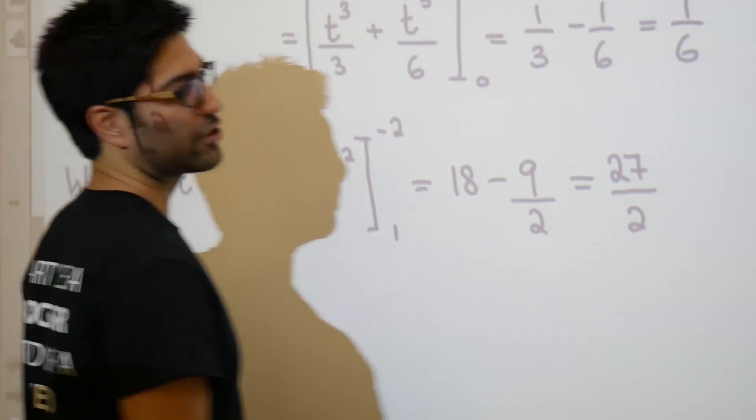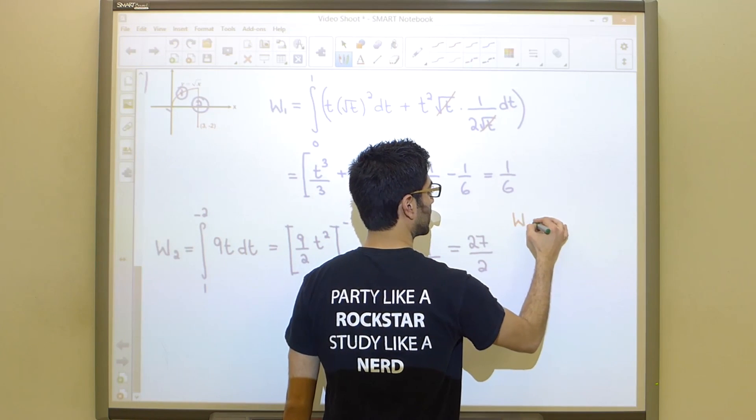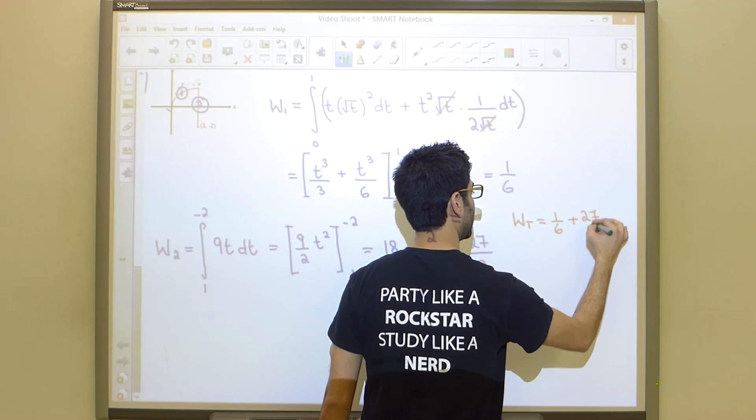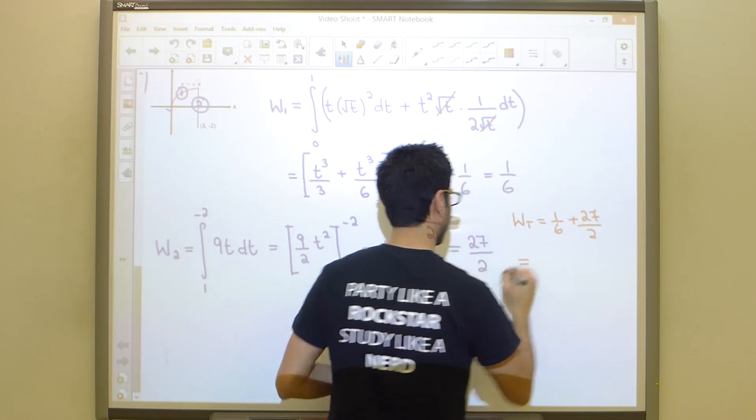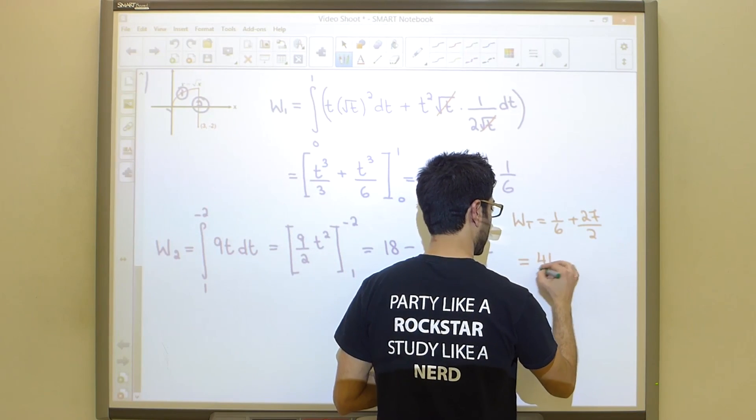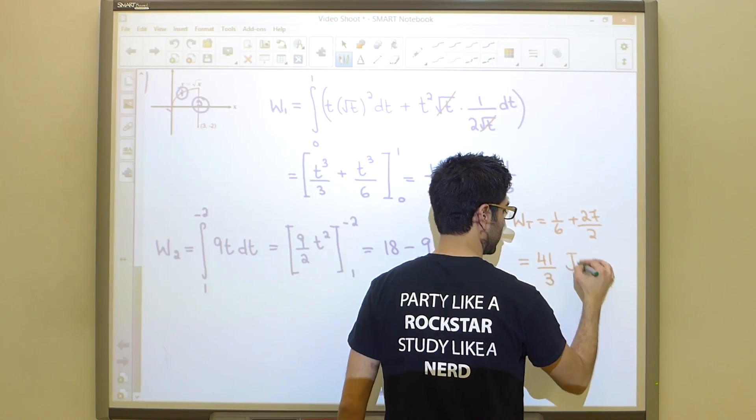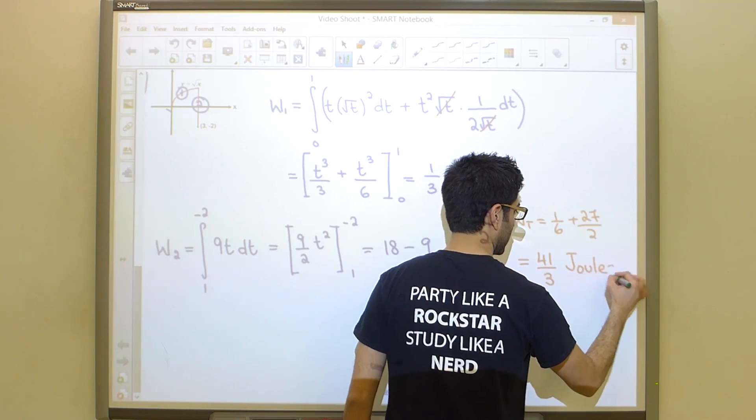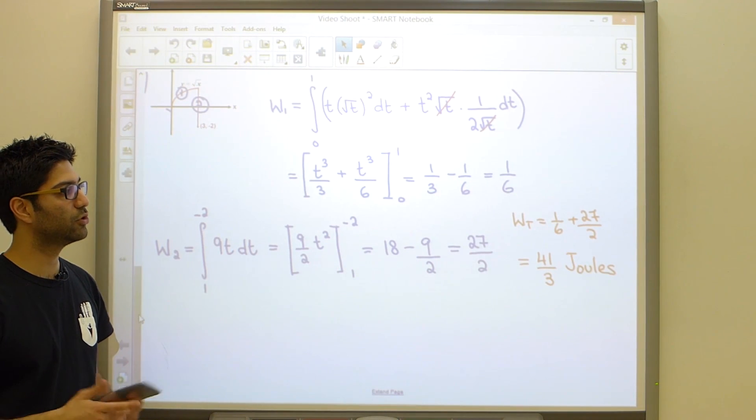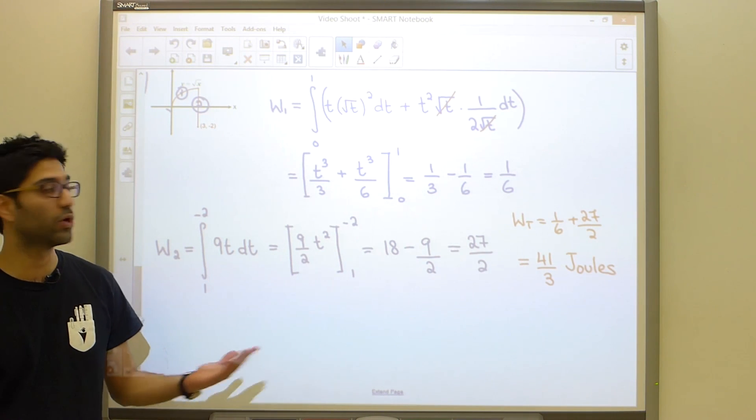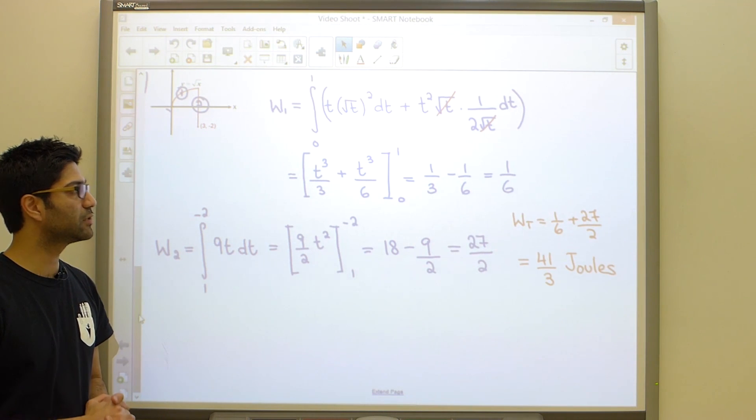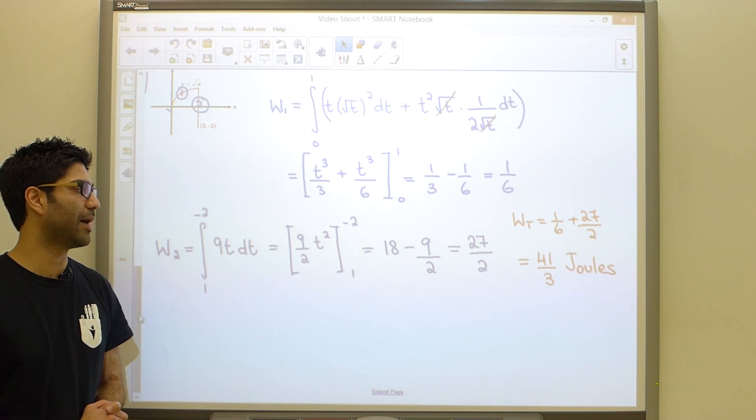To get our final answer, guys, we're simply going to add this up. So the total work done is going to be 1 over 6 plus 27 over 2 for a grand total of 41 over 3 joules. And hopefully, that clarifies a bunch of things about line integrals to you. Understand that if they ask for the work done, they're really asking you for line integrals. And for the moment, line integrals is really just an exercise in parameterization.